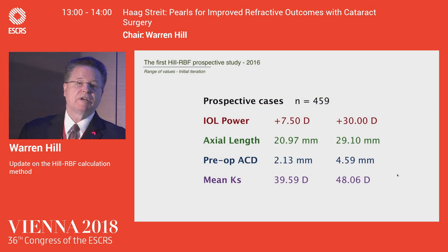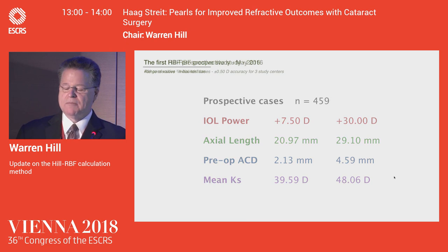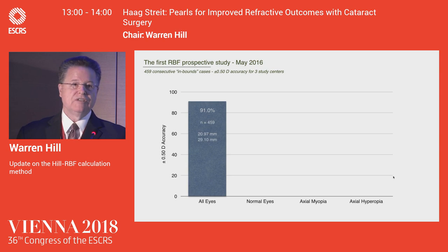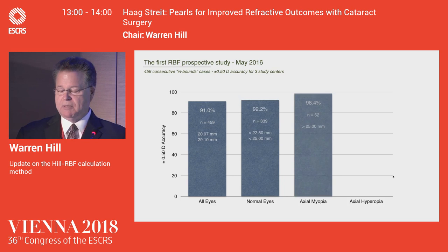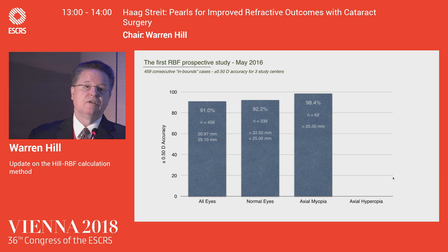This was the first prospective study done on the first version in 2016 — three different study sites, wide range of axial lengths, IOL powers, anterior chamber depths, and central corneal power. What we found was very gratifying. For consecutive cases — all eyes — it was about 91%. Remember, the boundary model was set at 90%, so this confirmed that. For normal eyes, we did a little bit better. For the axial myope, we didn't expect to see anything like this: 98% within half a diopter.